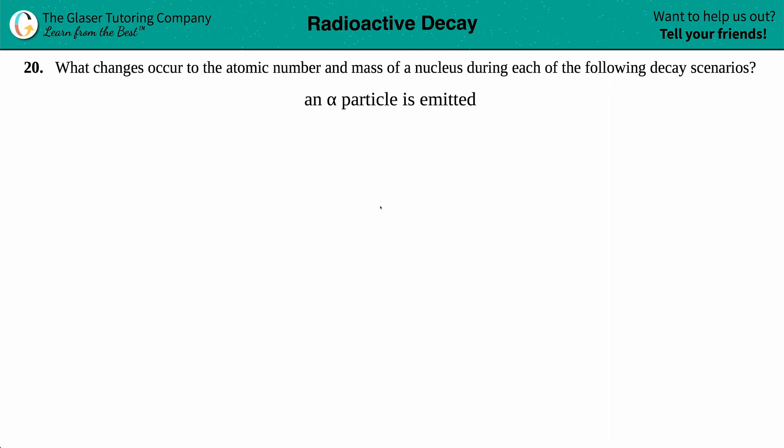Number 20: What changes occur to the atomic number and the mass of a nucleus during each of the following decay scenarios? An alpha particle is being emitted. Okay, so key in on the wording here. We are talking about emission, right? If something is emitted, it's undergoing emission, and if you are emitting something, you are putting it out there in the environment.